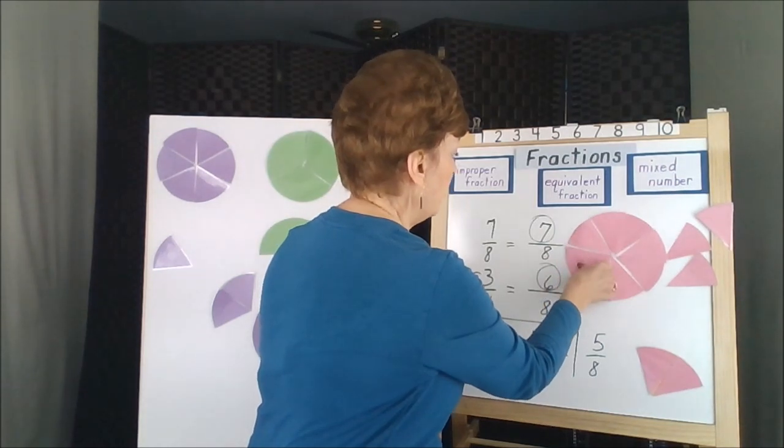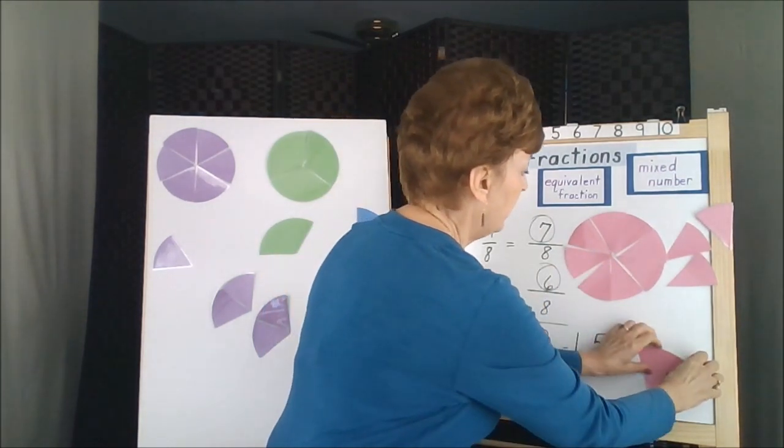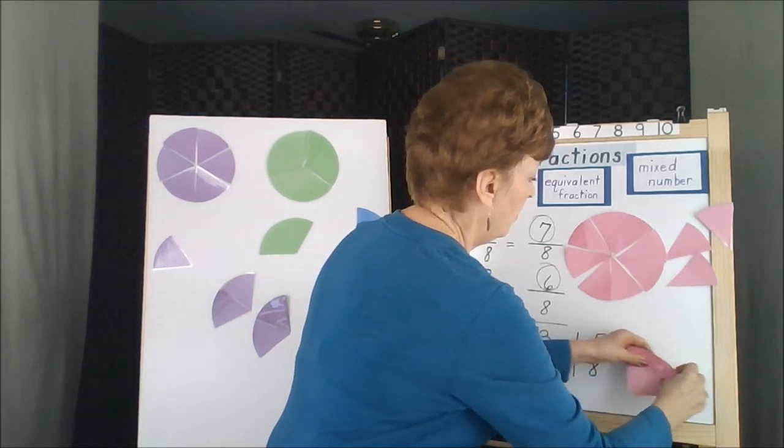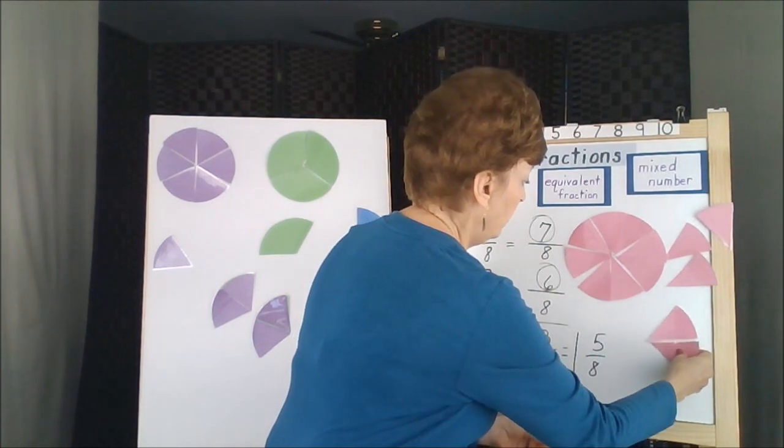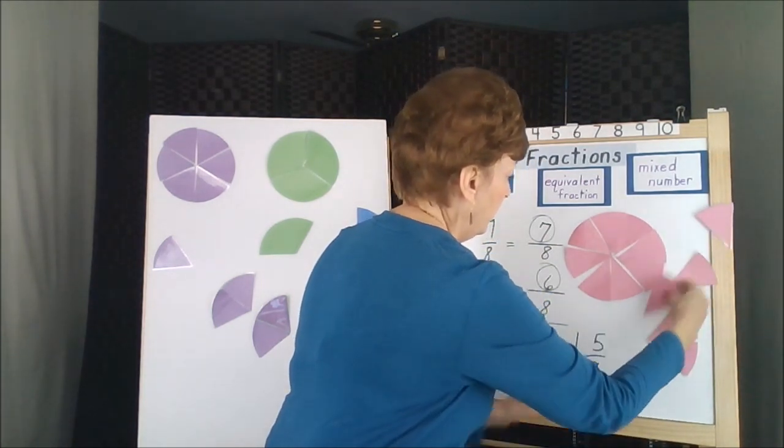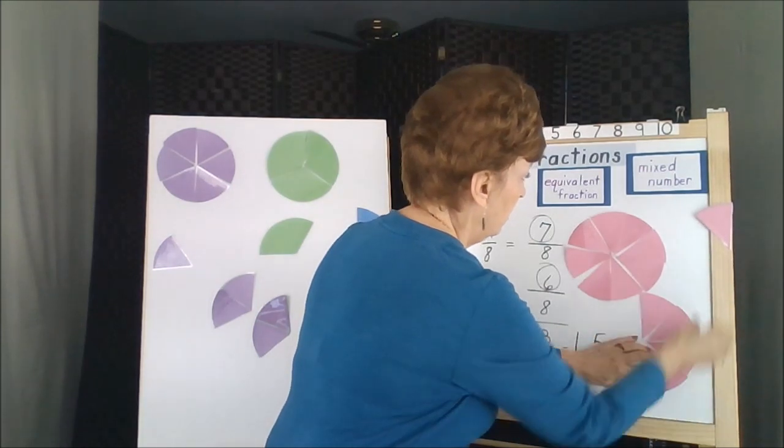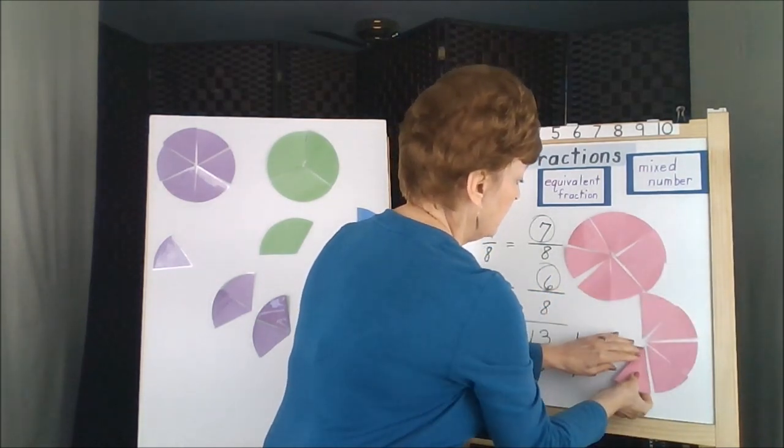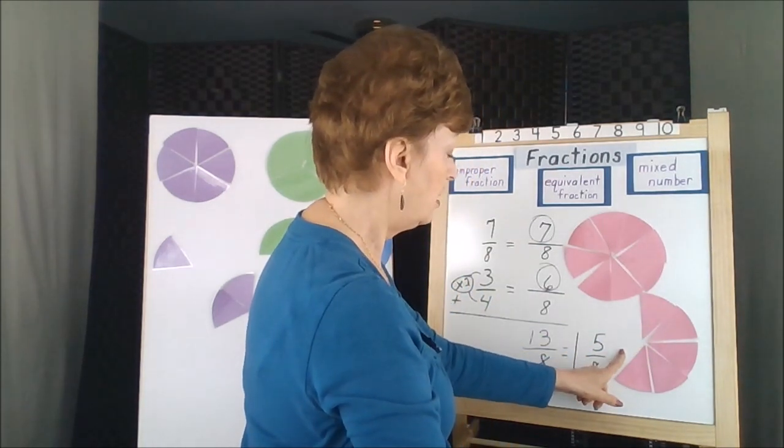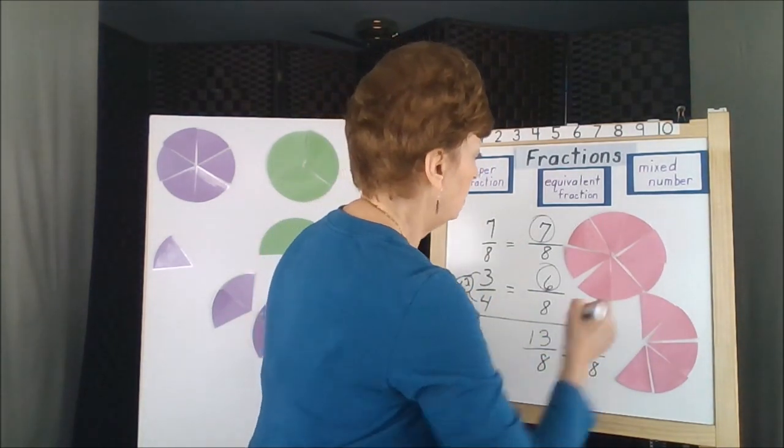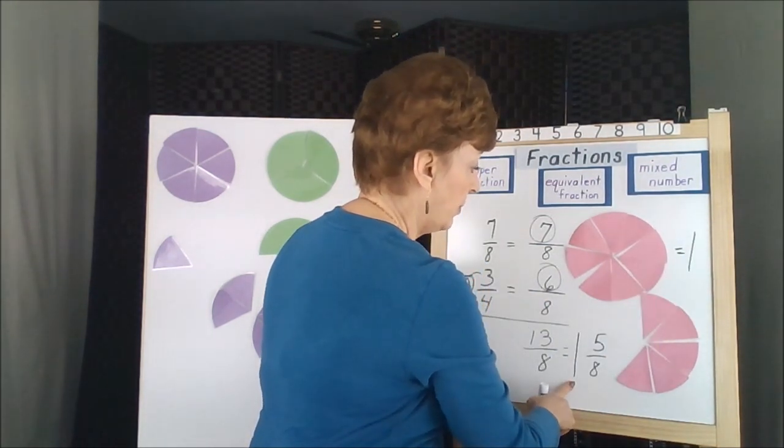That gives me one whole circle, one, two, three, four, five pieces left over. Do you see how this does not make a full circle? So I have one complete circle. This is one. That's how I got my whole number.